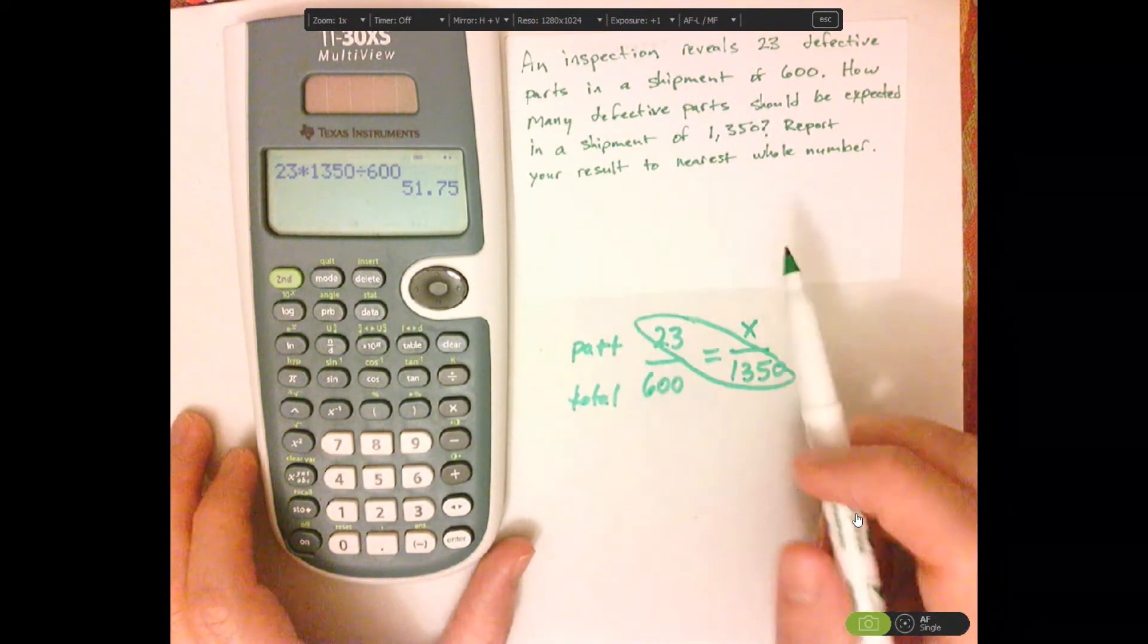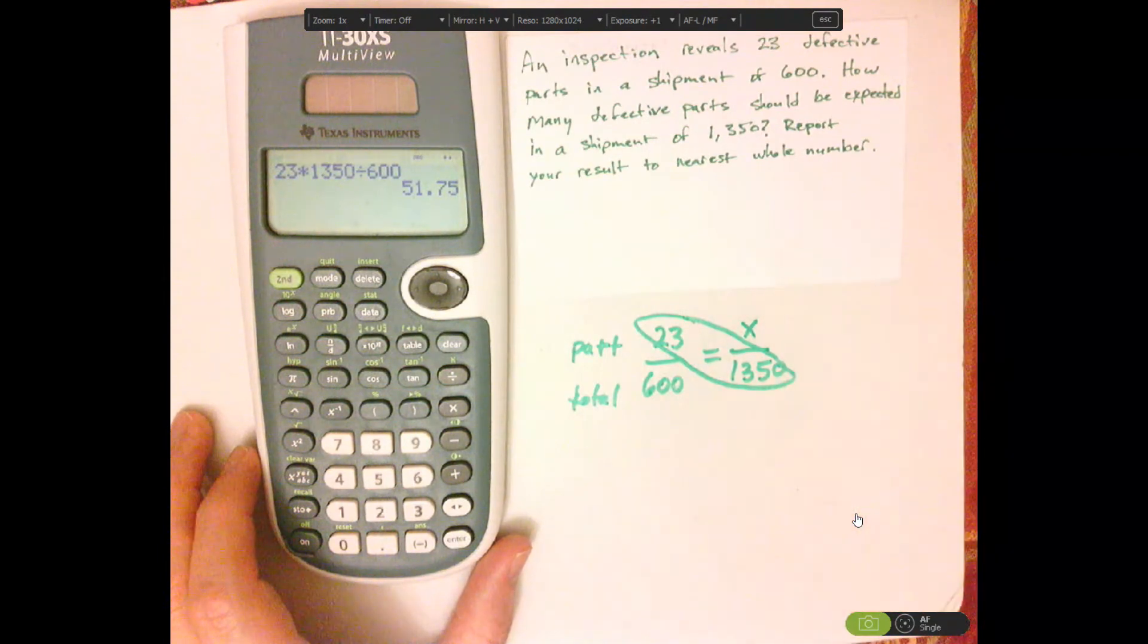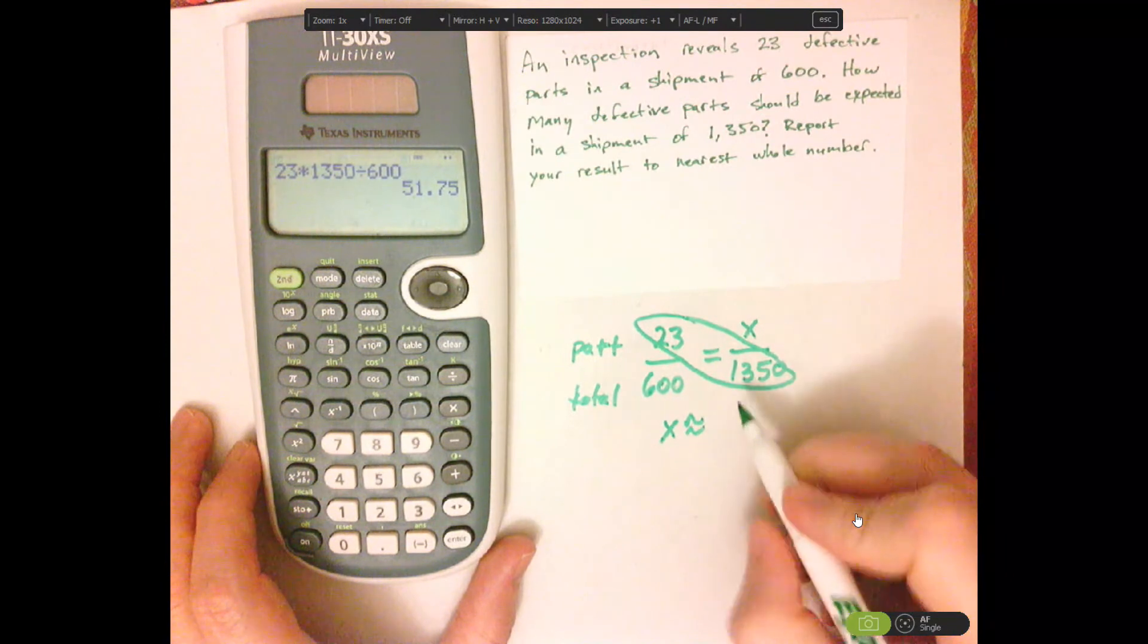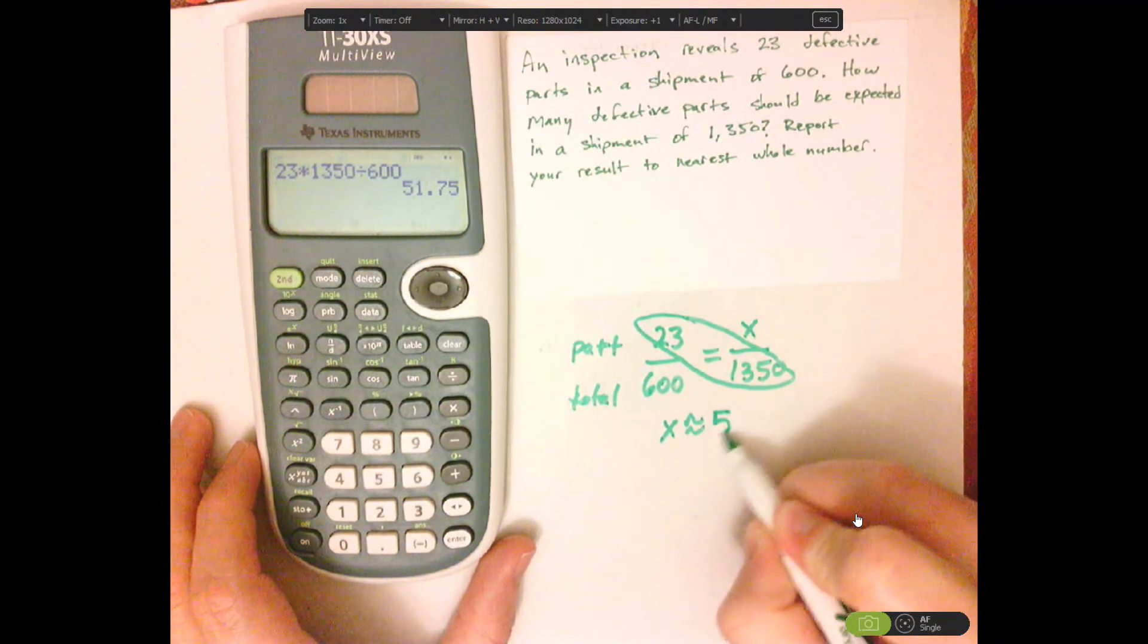They want me to approximate to the nearest whole number. So X is approximately 52.